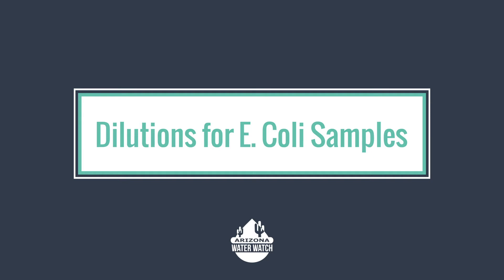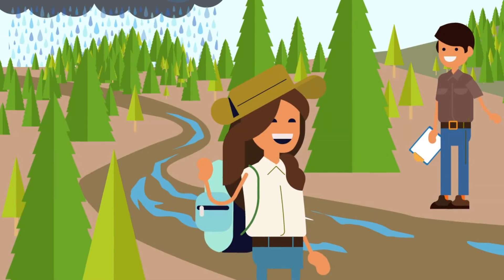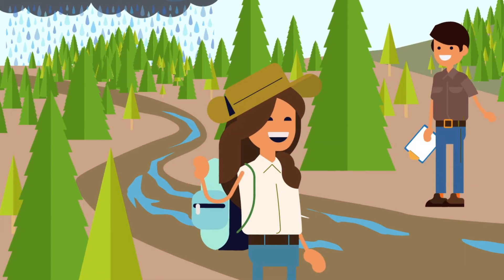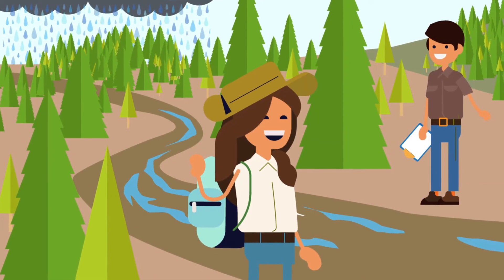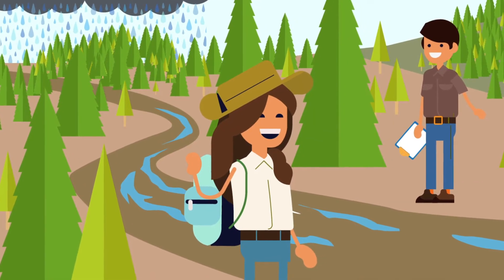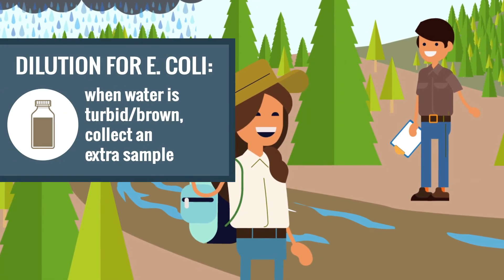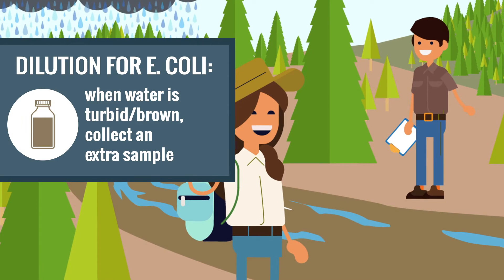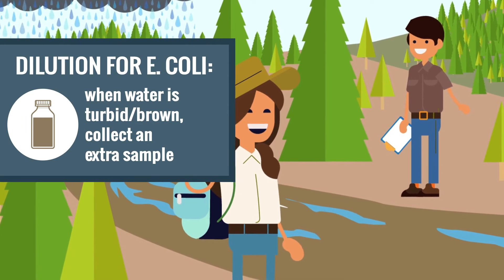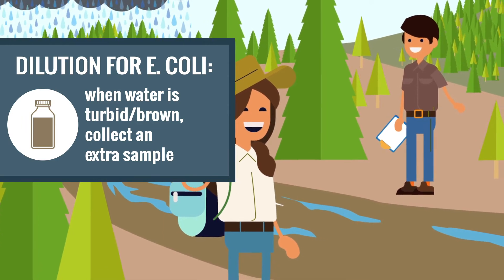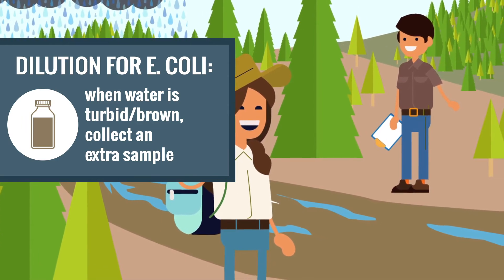When you're out sampling for E. coli, if the water is turbid and brown from sediment, you'll need to perform an E. coli dilution. While you're in the field, that just means collecting an extra 100 milliliter bottle of sample.